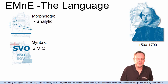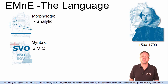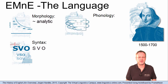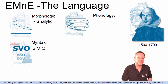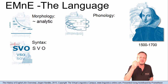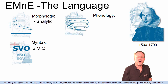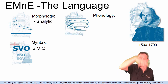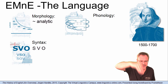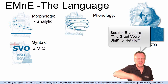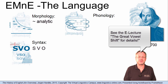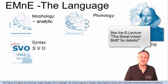The great change that classifies Early Modern English as a new period is mainly phonological in nature. Between 1450 and 1655, five of the seven long vowels of Middle English were raised, and two became diphthongized. This great vowel shift finally made English intelligible to the modern ear.